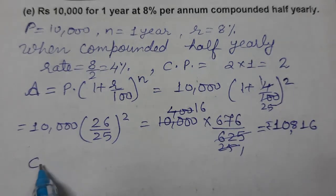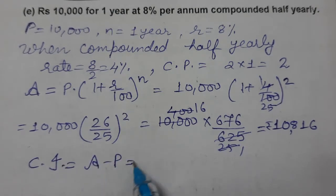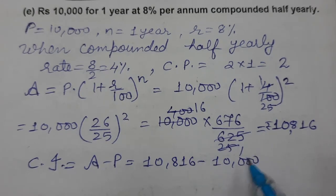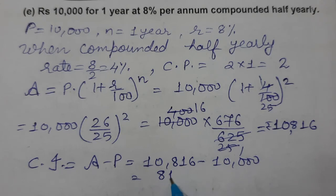Compound interest equals amount minus principal. Amount is 10,816 minus 10,000, so the answer is 816.